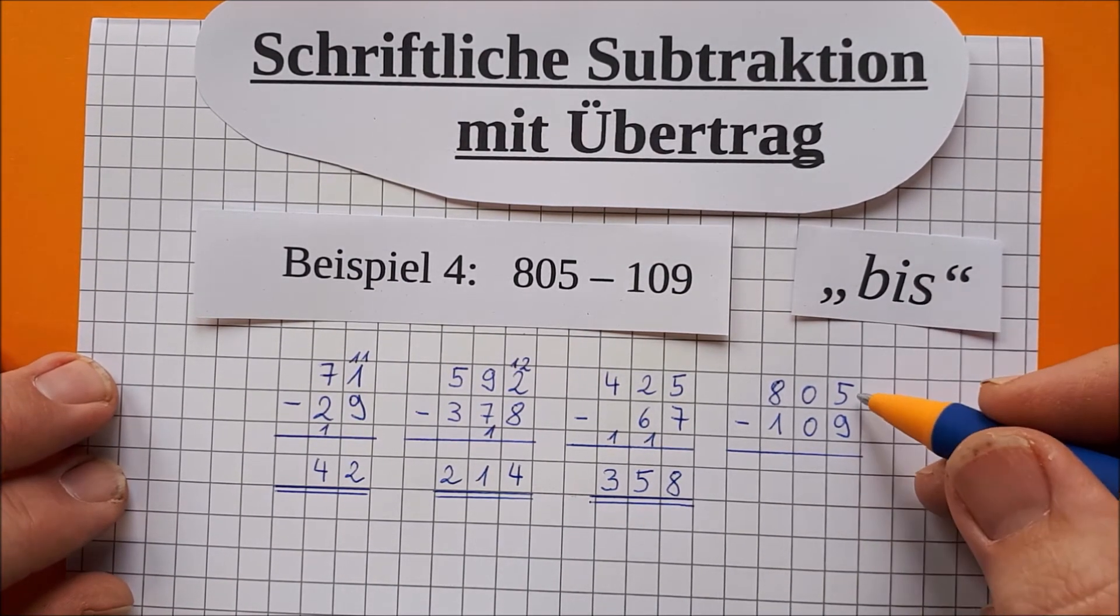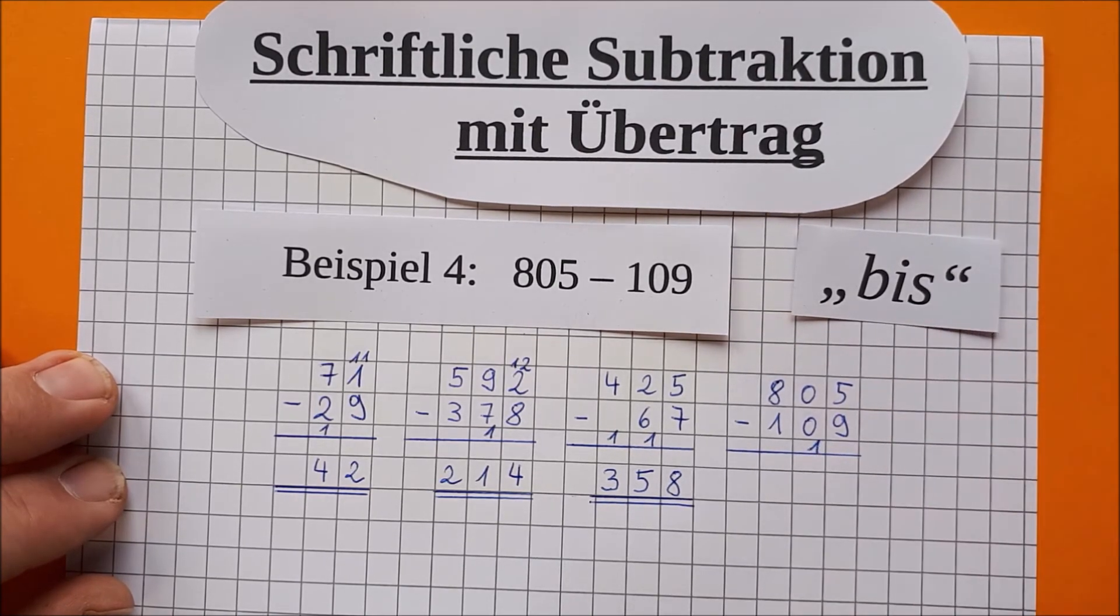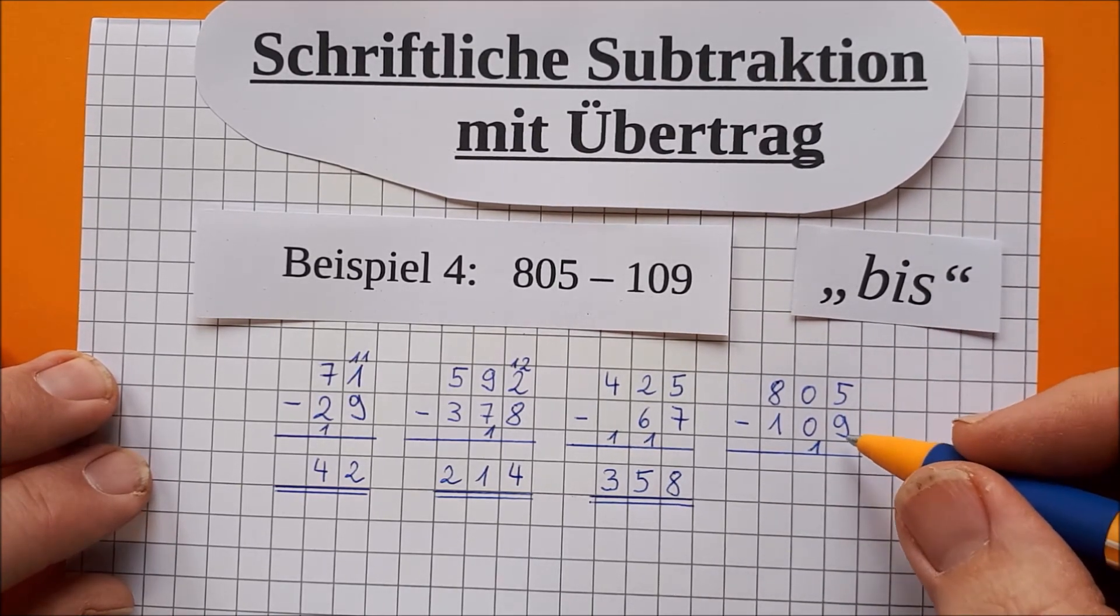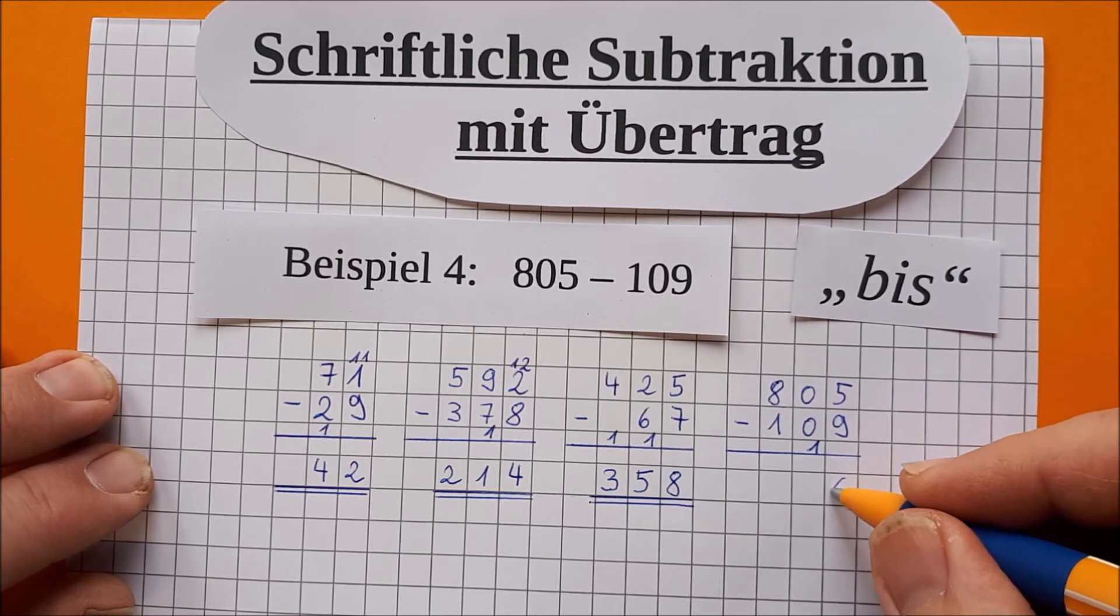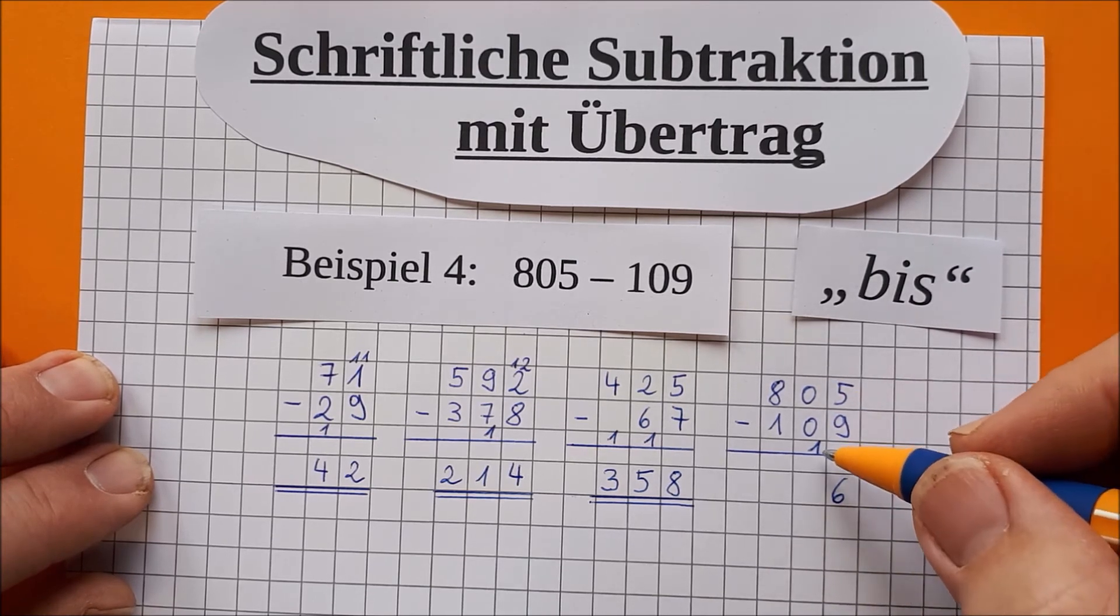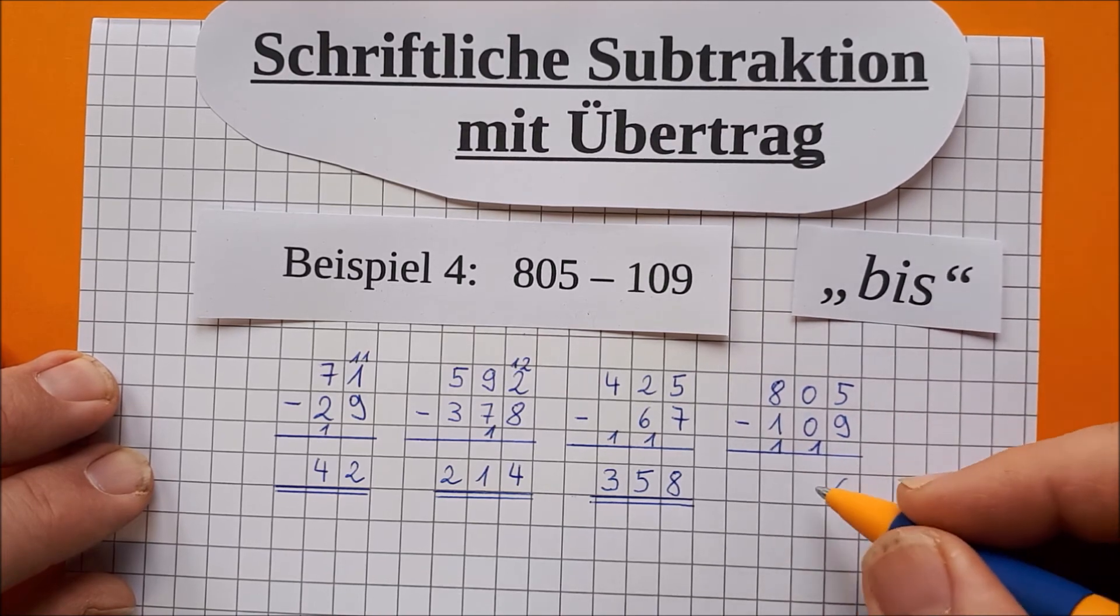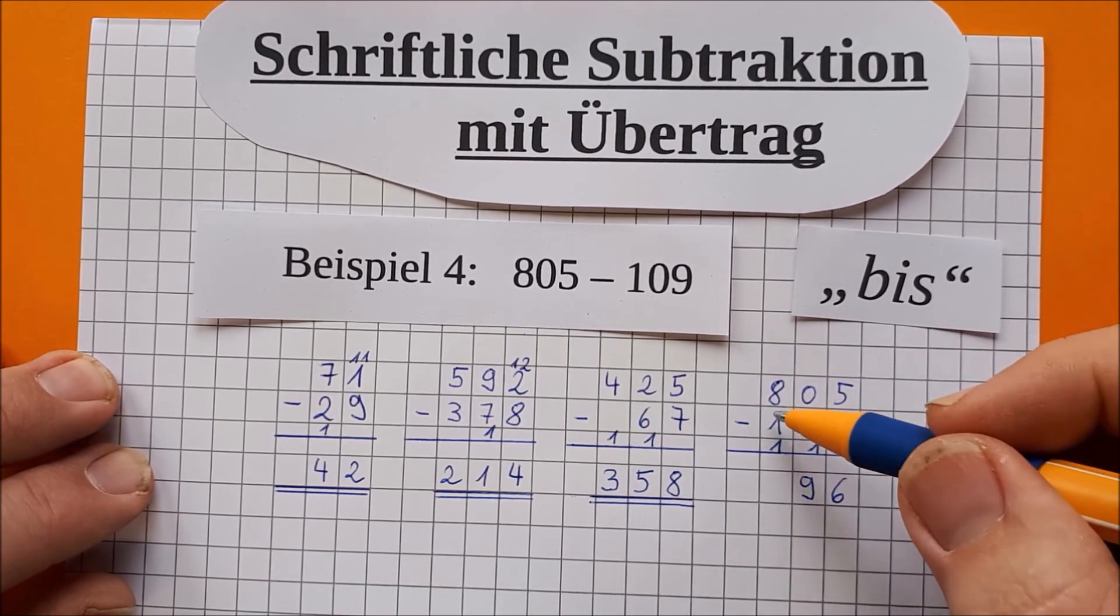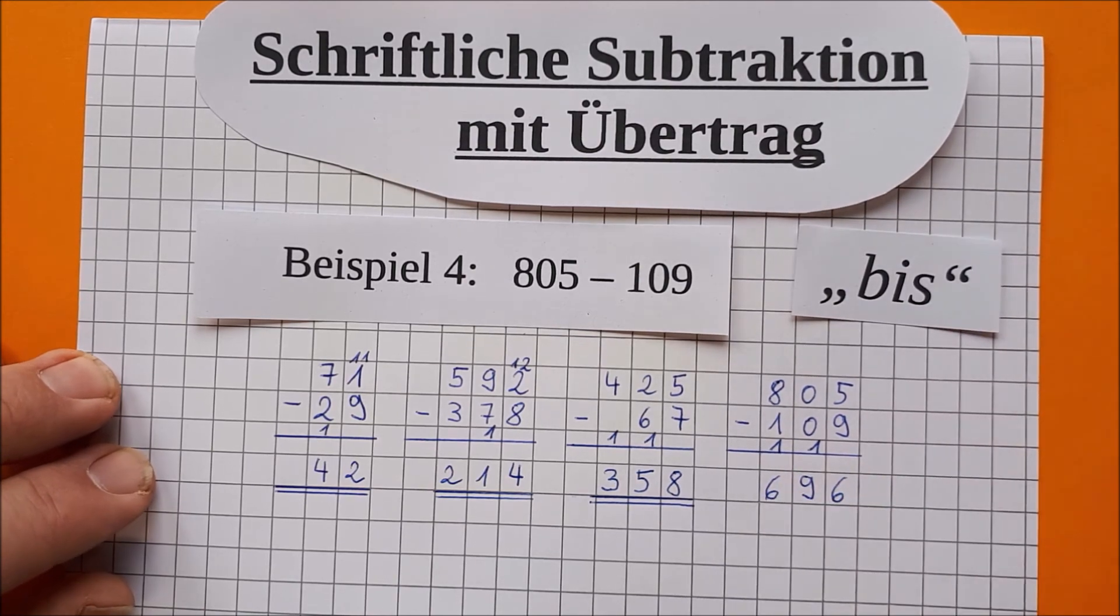Das Zauberwort ist bis. 9 bis 5. Ah, 9 bis 5 geht nicht. 9 bis 15 sind 6. Ach, Herr Bröcker. Konzentrier dich. Das müsst ihr auch. 1 bis 0 geht nicht. Also 1 bis 10 sind 9. Und dann haben wir hier unten 2. 2 bis 8 ist wie immer 6.